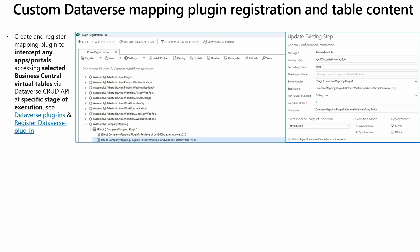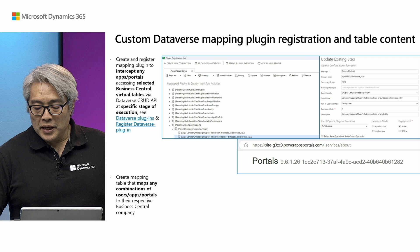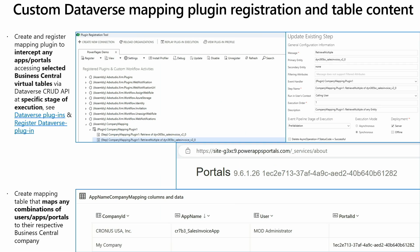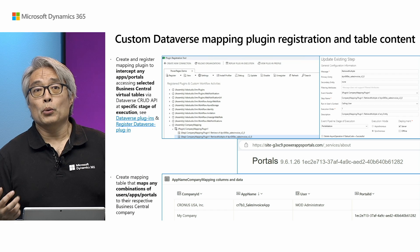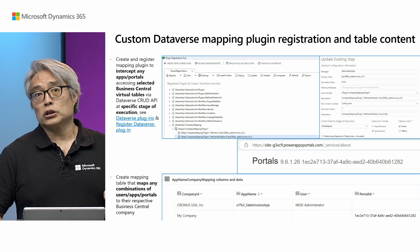With the mapping plugin in place, you create a record in the mapping table to ensure a certain site targets a certain Business Central company. When you're in the Power Pages portal, go to the URL and add the path underscore services slash about, and you can see the portal ID, which is a GUID. You enter this GUID into your mapping table — I call it app name company mappings. The last row for portal ID starting with 1E, C, 2E, etc. is targeting my company, so whenever that portal is open it will always use my company as the Business Central company target and override global and user-specific settings.